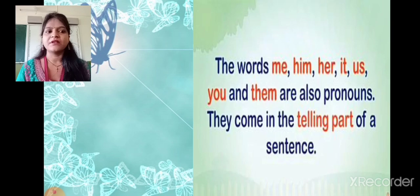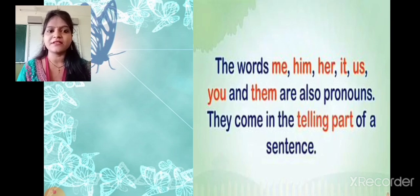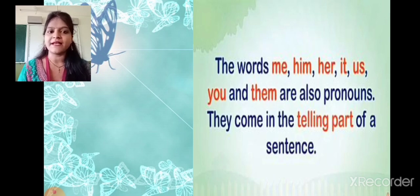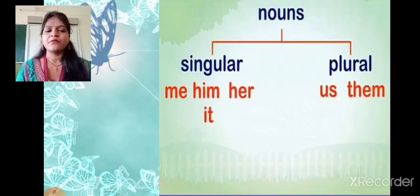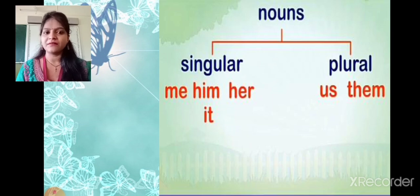Now, the words me, him, her, it, us, you and them are also pronouns. They come in the telling part of a sentence. For example: He is my father. I adore him. Regarding singular and plural: me, him, her and it are singular, while us and them are plural.